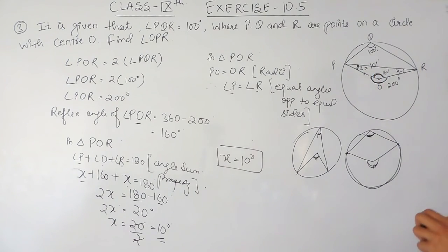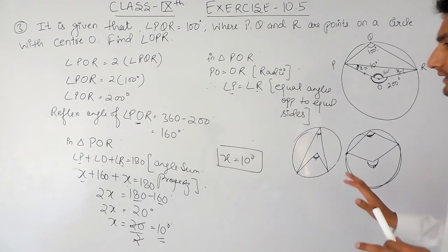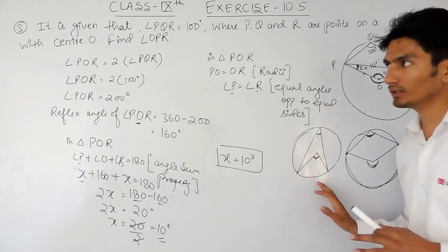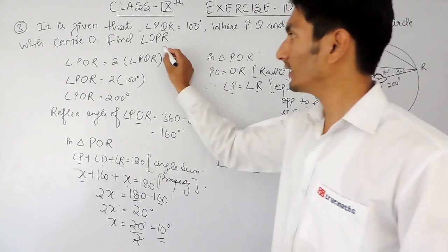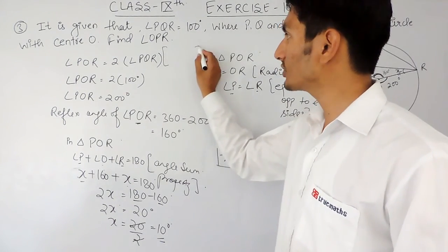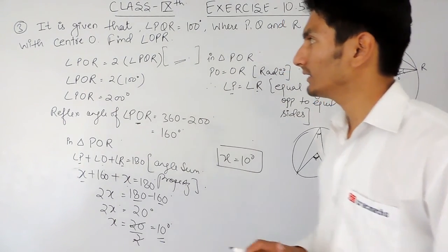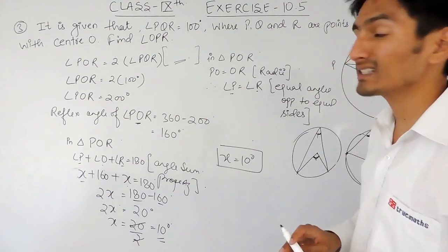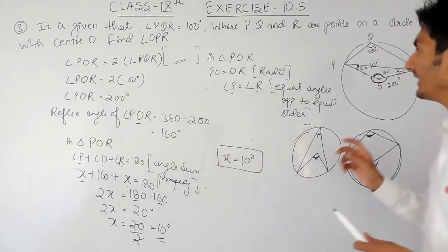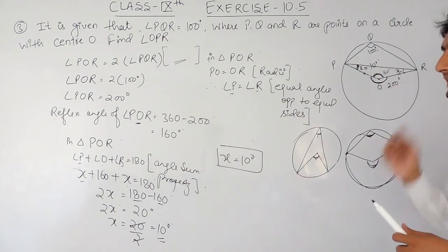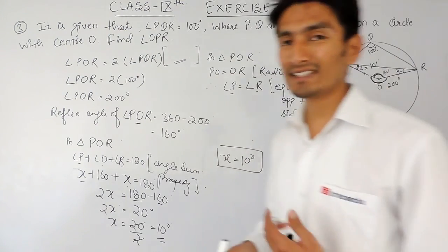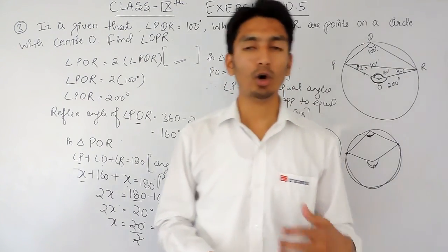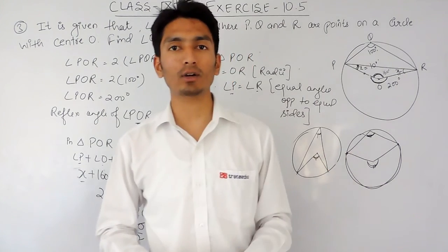So the value of angle OPR is equal to 10 degrees. This is how you can solve this complete question. You can mention the reason that the angle subtended by an arc at the center is double the angle subtended by it on the remaining part of that circle.